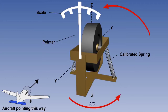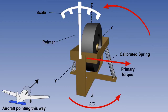However, if the aircraft turns — in this case to the left — the frame, which is attached to the aircraft, turns with it. The gyro rotor will be subjected to a primary torque around the ZZ axis, where the gimbal meets the frame, here and here.